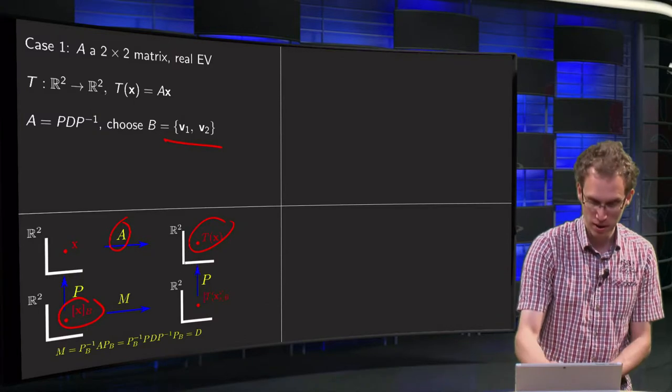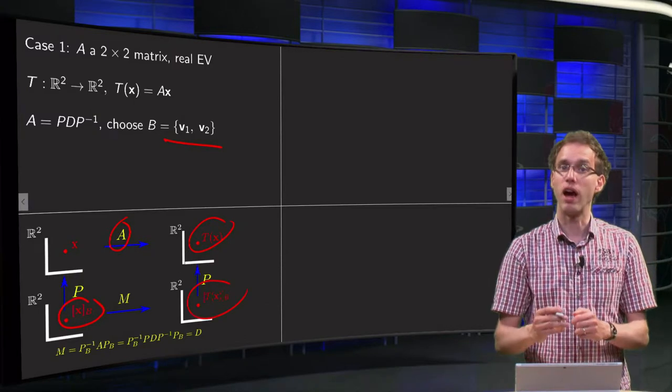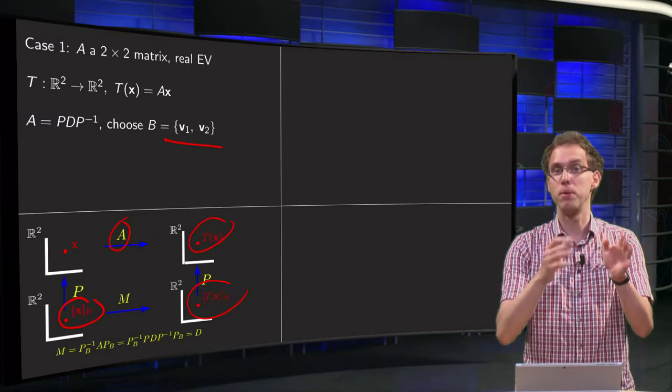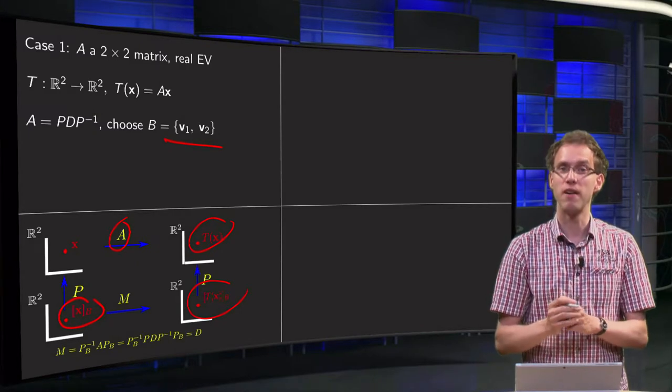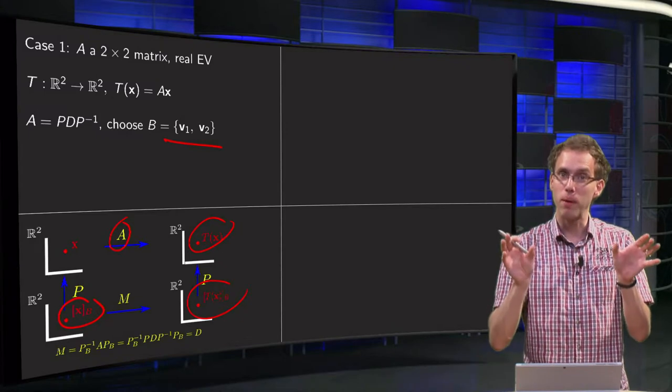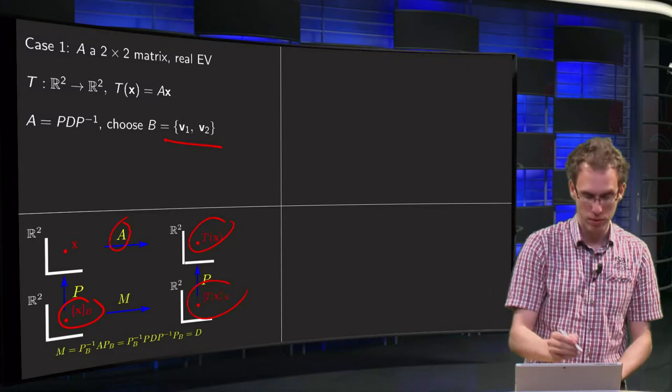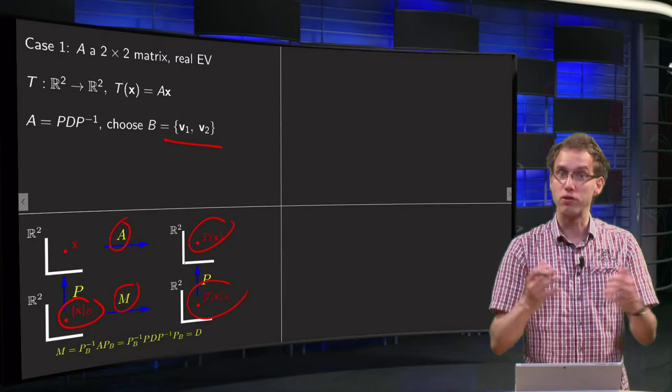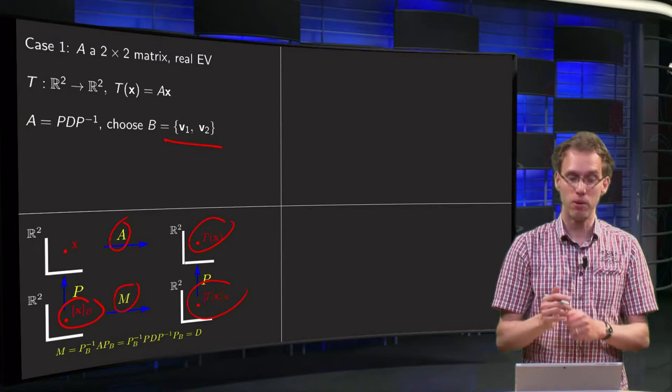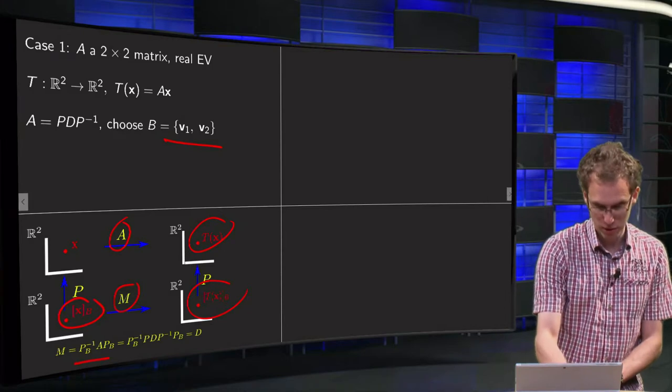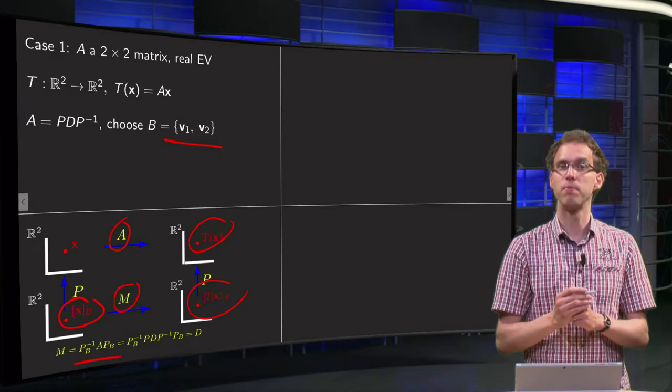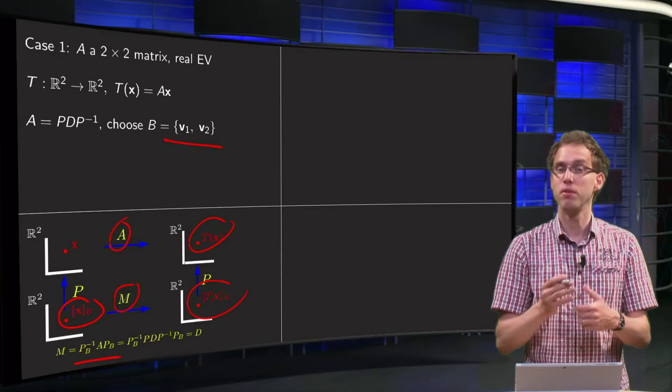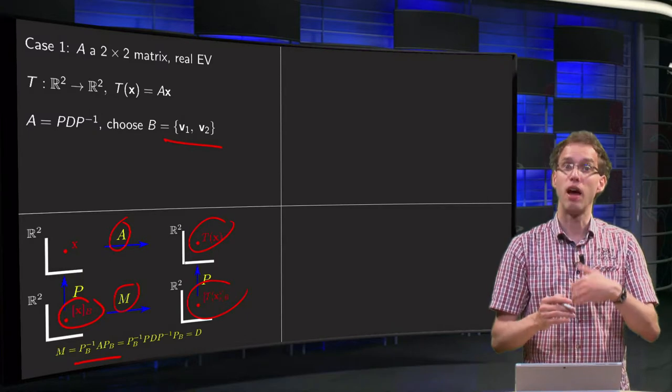We do the same over here: T(x) equals P_B times T(x) in basis B. So now we view our mapping in this new basis and call this matrix M. We learned how to find this matrix M: M is P_B inverse times A times P_B. We know our P_B because we've chosen our basis B, and we know our A.